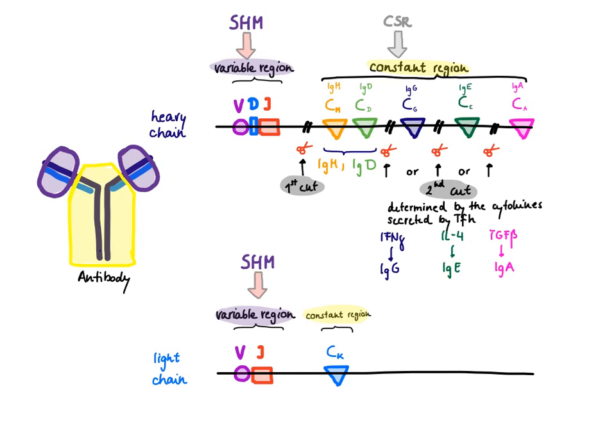Class-switch recombination is driven by an enzyme complex called recombinase. This recombinase always makes two cuts and then recombines the DNA. The first cut is fixed and always happens right before the mu and delta chain.